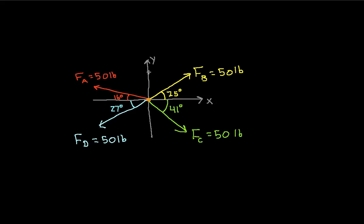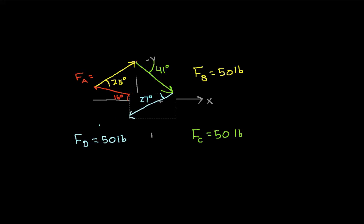To add vectors, you'll remember, if I'm doing it graphically, I move vectors so that the tail of one is at the head of the first one. In this case, we'll move FB so that its tail is at the head of FA. Then we'll move FC so that its tail is at the head of FB. And finally, we'll move FD so that its tail is at the head of FC.